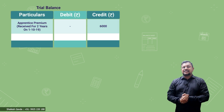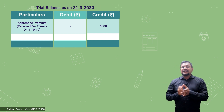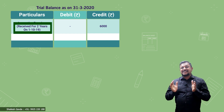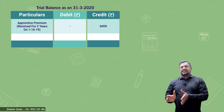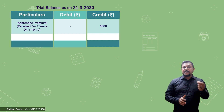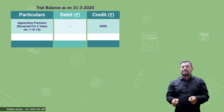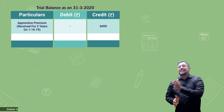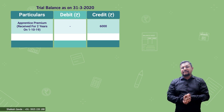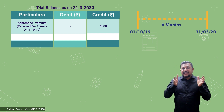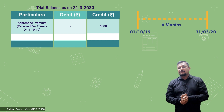We'll understand this with one illustration. In the trial balance as on 31st March 2020, apprentice premium is given on the credit side as 6,000, with a note in brackets: 'received for two years on 1/10/19.' So 6,000 rupees was received for two years. In the current year, this premium was received on 1/10/19, so from 1/10/19 to 31st March 2020 is six months. Therefore the current year's apprentice premium income is for six months.